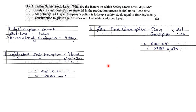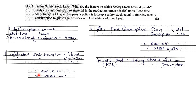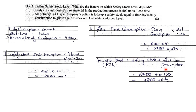Once we have both values, we apply the final formula: Reorder Level = Safety Stock + Lead Time Consumption = 2,400 + 2,400 = 4,800 units. Under Reorder Level, three formulas are required: Safety Stock, Lead Time Consumption, and Reorder Level itself. With these three formulas, we will be able to solve any kind of sum based on Reorder Level. You also need to learn the theoretical definitions that may be asked alongside.